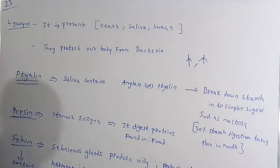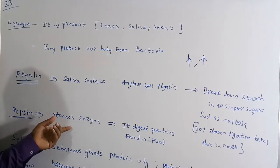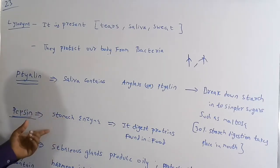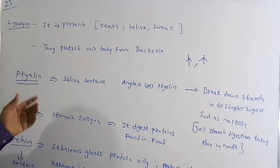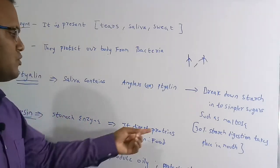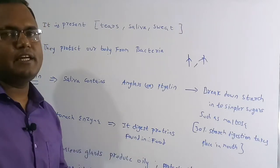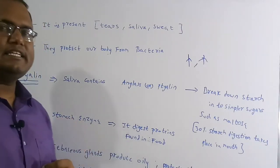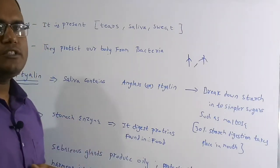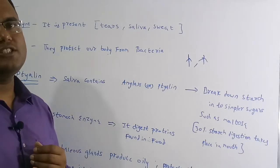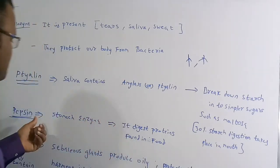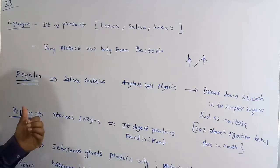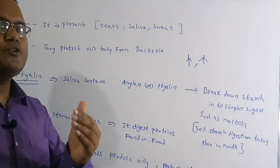Pepsin is a special type of enzyme present in the stomach. This pepsin enzyme digests proteins. Whatever food you take contains proteins, and these proteins are digested with the help of the special enzyme pepsin.